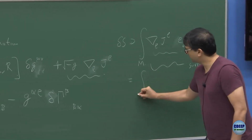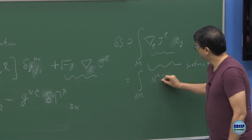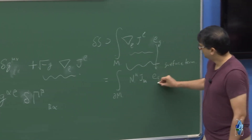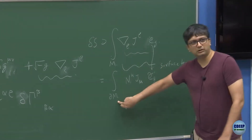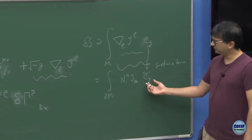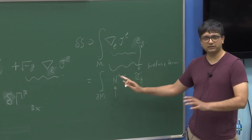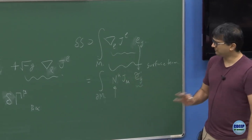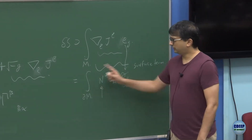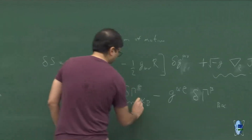When you consider the integration over the volume form, the part of the integral involving del_rho J^rho times sqrt(-G) is a total divergence. By the generalized Stokes theorem — effectively Gauss's law — this can be written as an integral over the boundary of M of some normal vector n^mu J_mu, integrated over the volume form inherited from the manifold but restricted to the boundary of M.